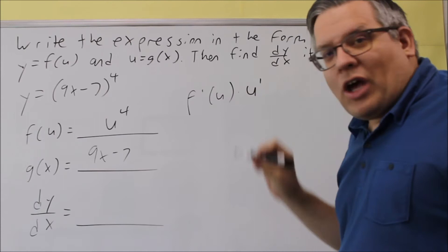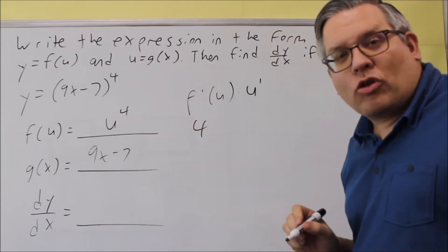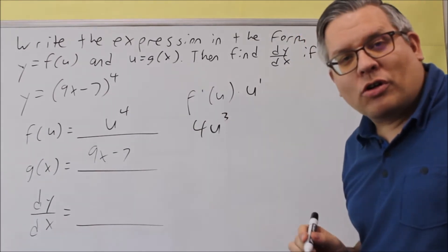First, the derivative of f, that means that you're going to bring the power down, so we're using the power rule for that one. Four comes down, u subtract one, and you get four u to the third.